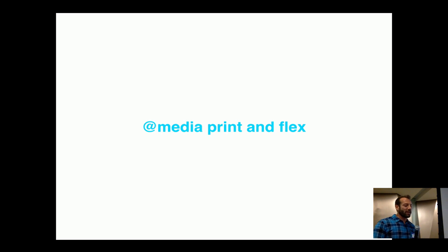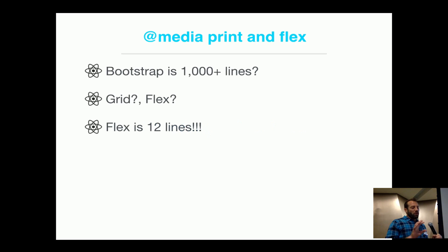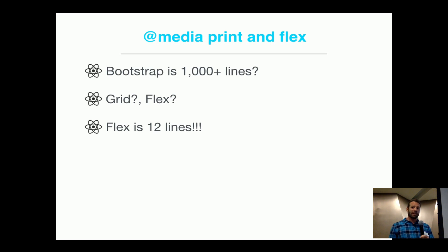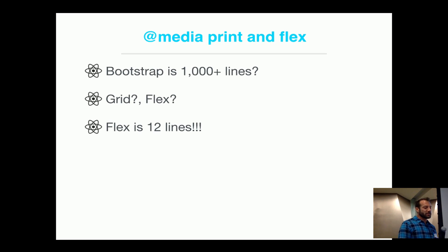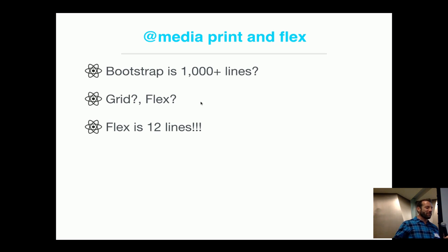So, @media print and Flex CSS. With my initial attempt, I kept Bootstrap — I'm using React Bootstrap for the application, which is basically React components made with Bootstrap styling. It gives you a quick and easy way to get Bootstrap styling into a React application. However, Bootstrap is over 1,000 lines, and rather than try to hack through those 1,000 lines to see what I needed to get the page to display properly in a PDF, I thought there's got to be another way. Even if I knock it down to 500 lines, I'm not going to restate 500 lines in my @media print query.